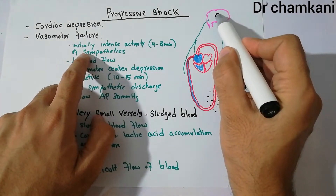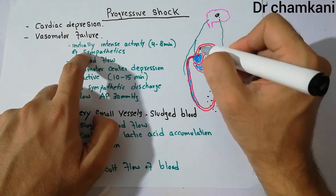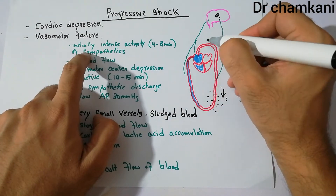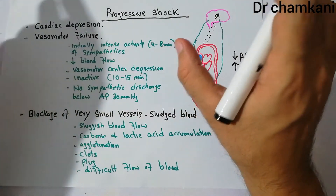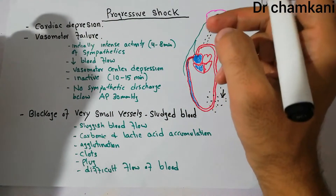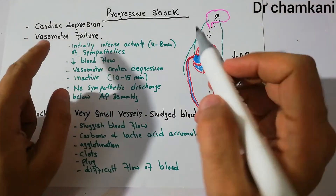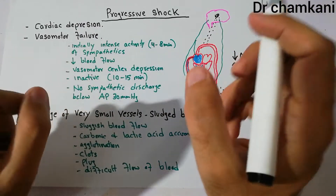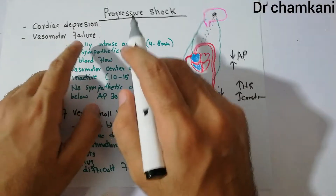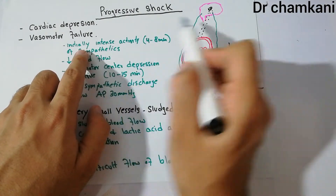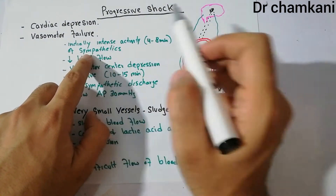The vasomotor center detects the decrease in blood flow through the blood coming to the brain. Blood vessels bring blood to the brain and the vasomotor center keeps detecting different nutrients in that flow, determining whether other cells of the body are receiving proper nutrients. Initially, if there is a fall in nutrient supply due to non-progressive shock, there is a very intense activity of the vasomotor center, especially in the first four to eight minutes, and sympathetic discharge occurs.